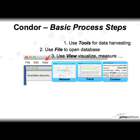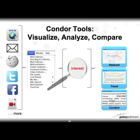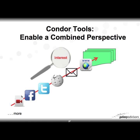In sum, the basic process steps you use over and over are: Tools for data harvesting into a particular database, File to open that database, and View to visualize and measure your network. Ultimately, Condor tools explore your area of interest, translating it into network maps that provide measures of trends and stability. For content analysis, Condor enables a combined perspective across these dimensions — a powerful way to analyze your area of interest.